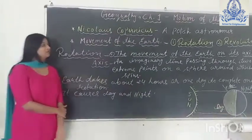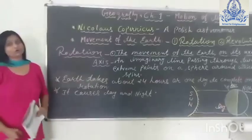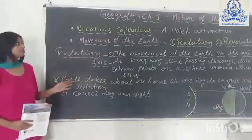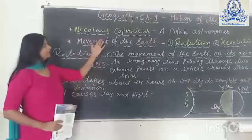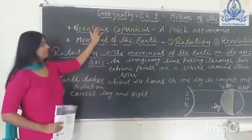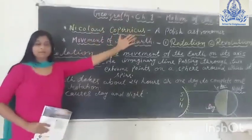This book is divided into three parts: geography, history, and civics. So first of all we will read the first chapter of geography — motion of the earth.